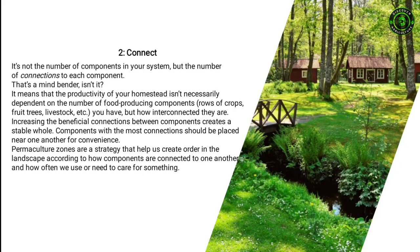Principle two: Connect. It's not the number of components in your system but the number of connections to each component that matters. The productivity of your homestead isn't necessarily dependent on the number of food-producing components — rows of crops, fruit trees, livestock — you have, but how interconnected they are. Increasing the beneficial connections between components creates a stable whole. Components with the most connections should be placed near one another for convenience. Permaculture zones are a strategy that helps create order in the landscape.